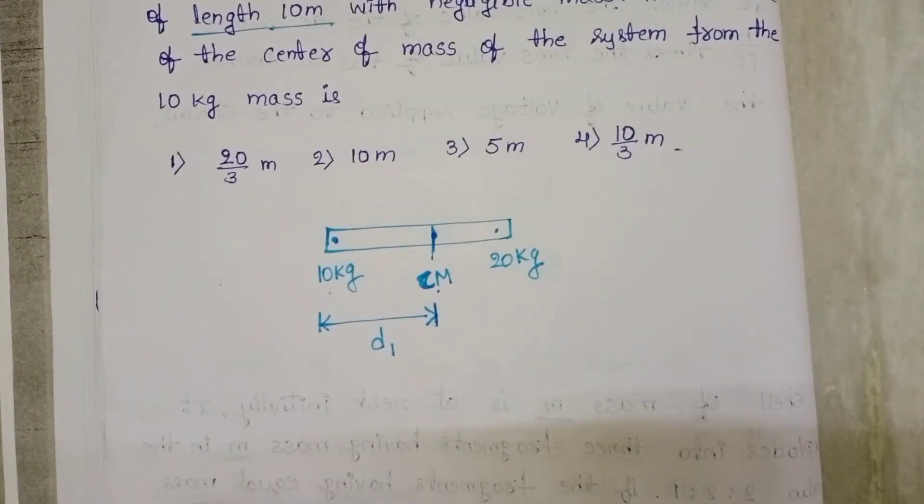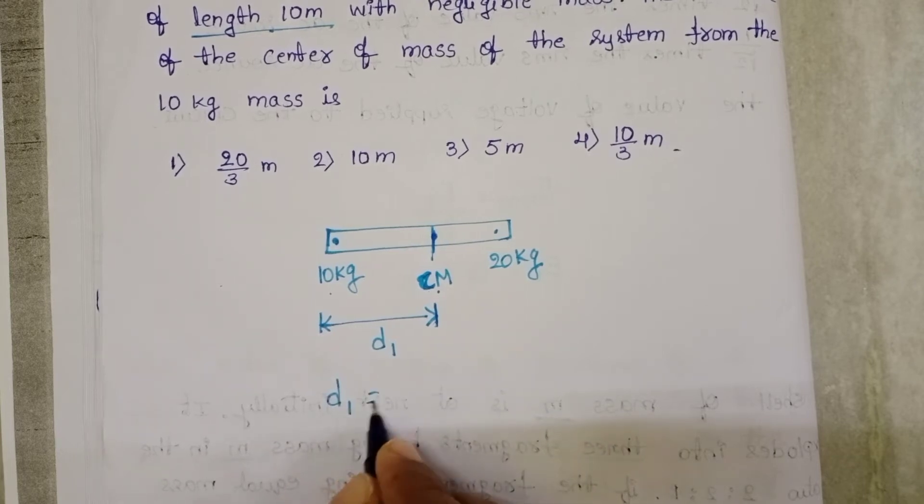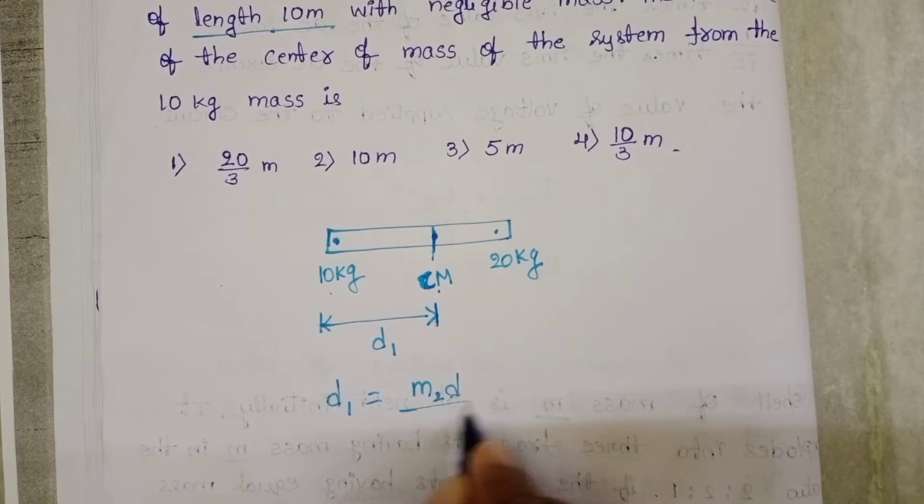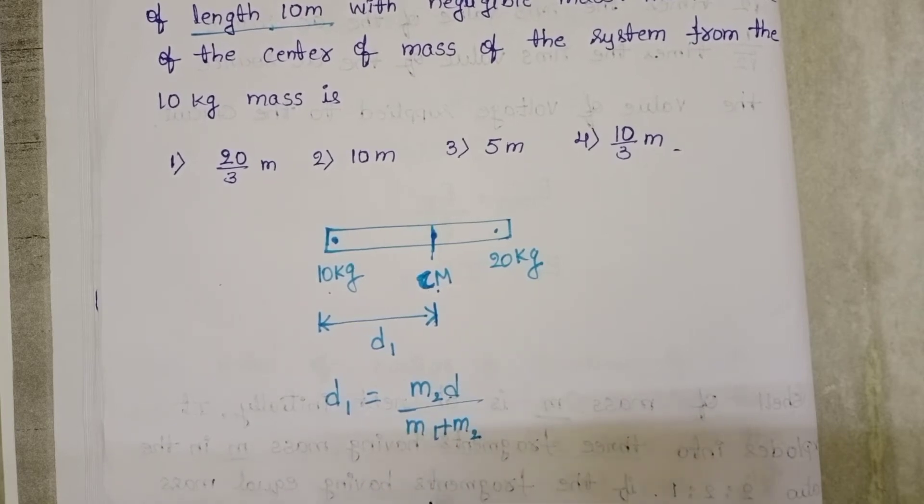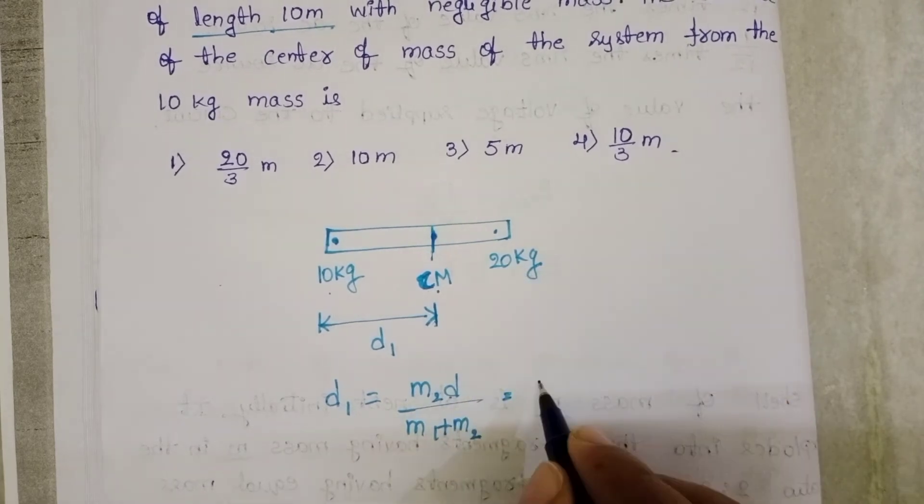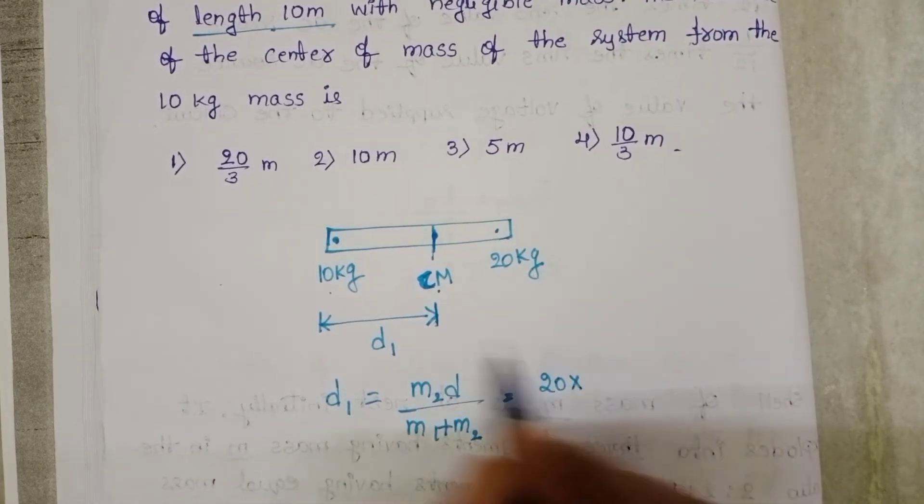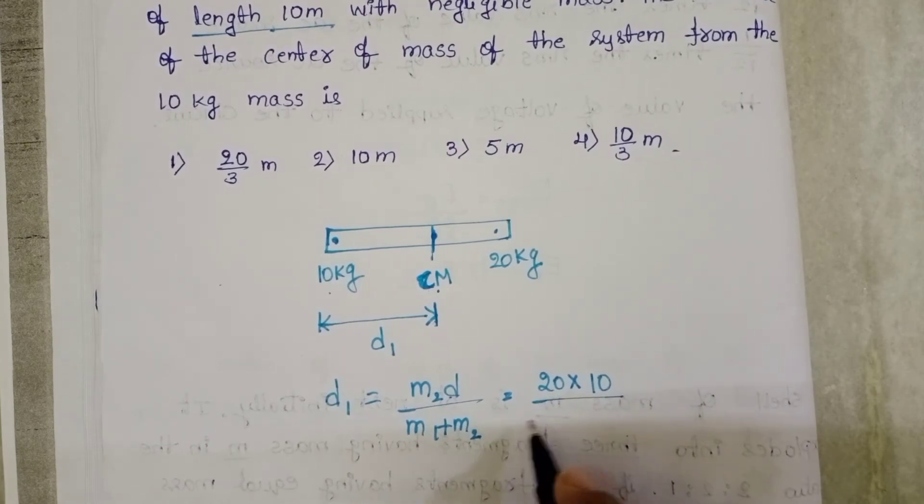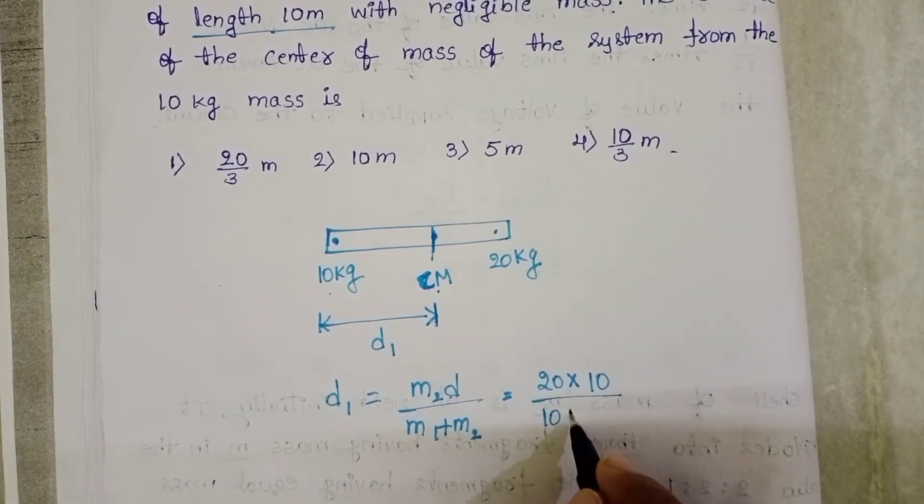The direct formula to find distance d1 is d1 equals m2 d divided by m1 plus m2. M2 is 20 kg, the distance between the two masses is 10 meters, and m1 plus m2 equals 10 plus 20.